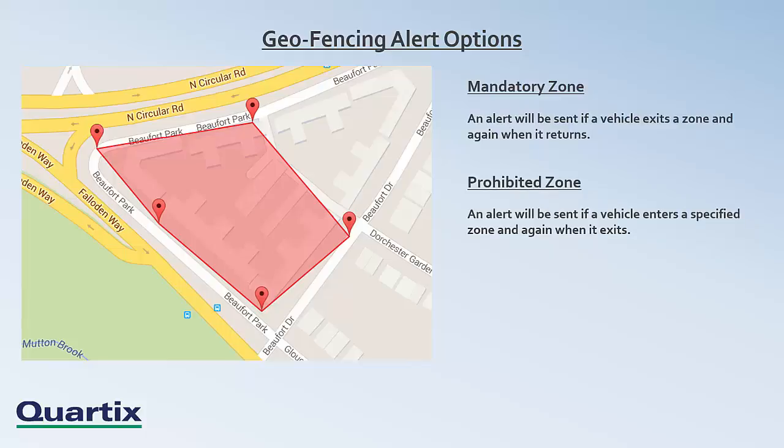Secondly is a prohibited zone. If a prohibited zone is set, this means the vehicle is not allowed to be in the area during the time specified. A breach occurs when the vehicle enters the set zone and is cleared when they exit. Alerts will be sent on each occasion. An example of this type of zone is the London congestion zone, where some city-based businesses like their drivers to bypass heavily congested routes or those which incur tolls or other charges.